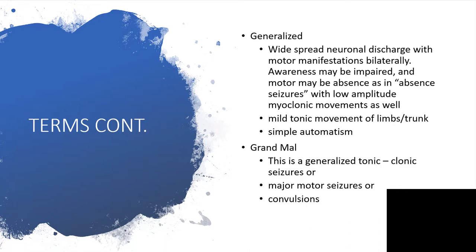It's possible we come across a term called generalized seizures. In other words, that will be a kind of widespread neuronal discharge with motor manifestations bilaterally. The awareness may be impaired and motor may be absent as in case of absence seizures. Absence seizures will be one of the generalized seizures with low amplitude myoclonal movement as well. It's also possible that it will have much tonic movement of limbs and trunk or simple automatism.